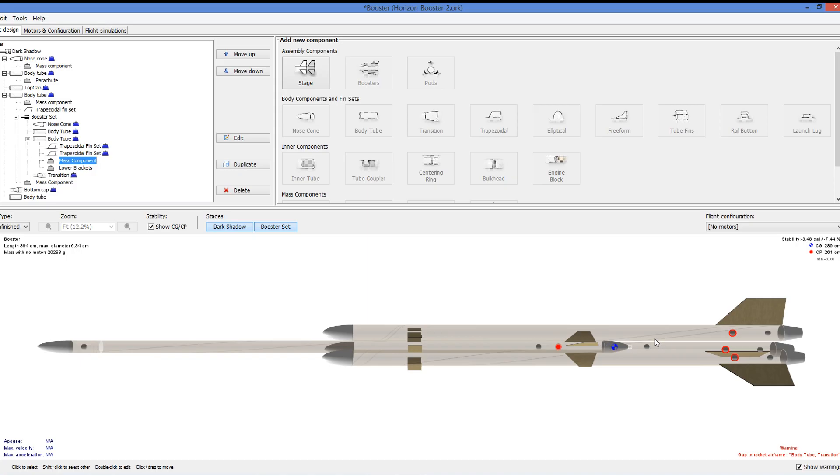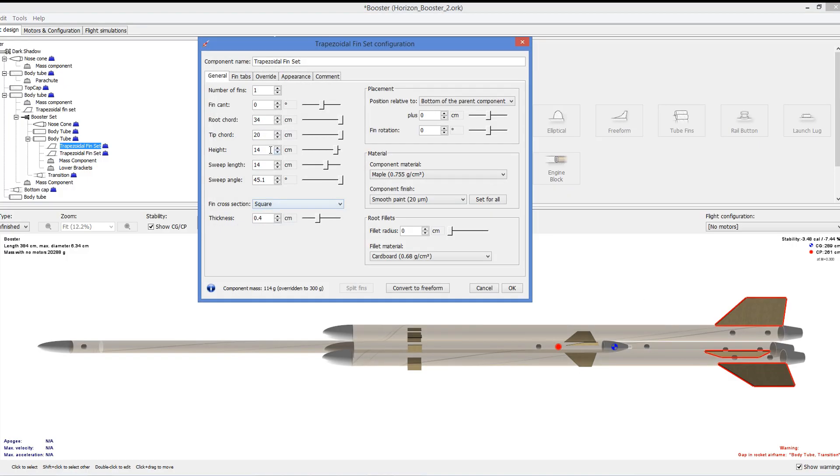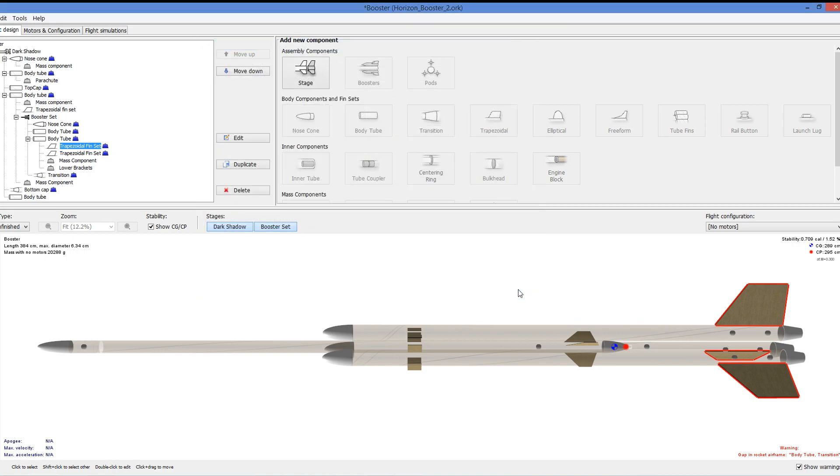So we can go in and make the fins larger until we get into a stable configuration. Now because the water will be expelled so quickly, it will actually become much more stable very shortly after launch. That center of gravity is just going to move up the rocket as it loses water. And that's how we figured out the size of the fins.